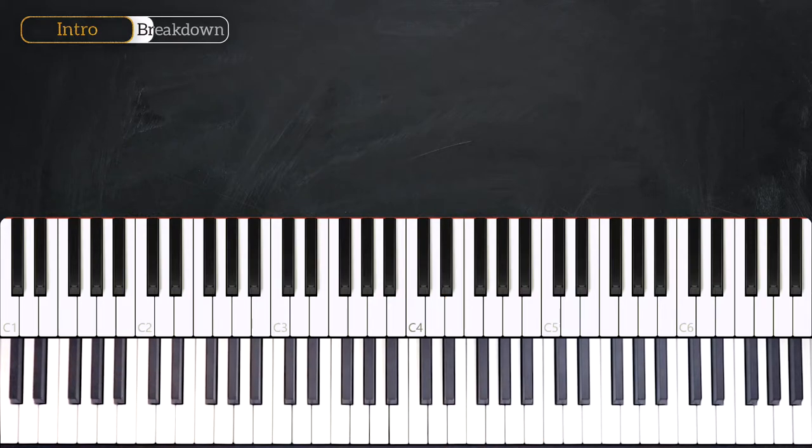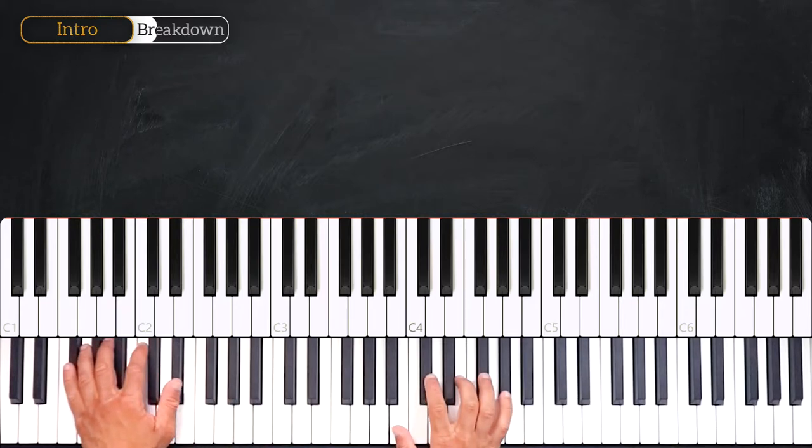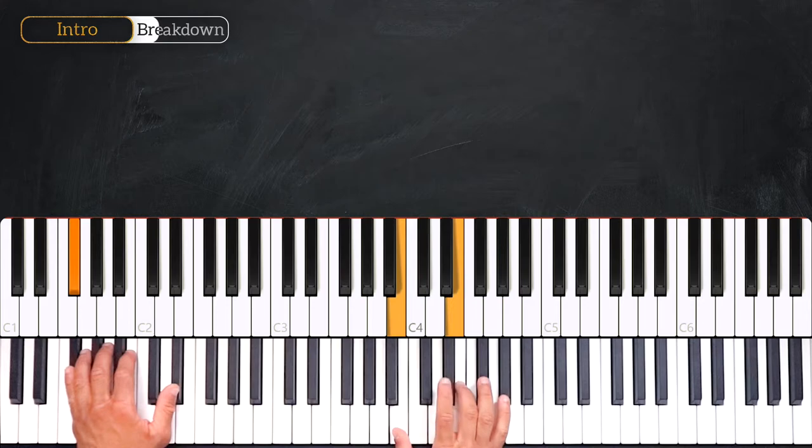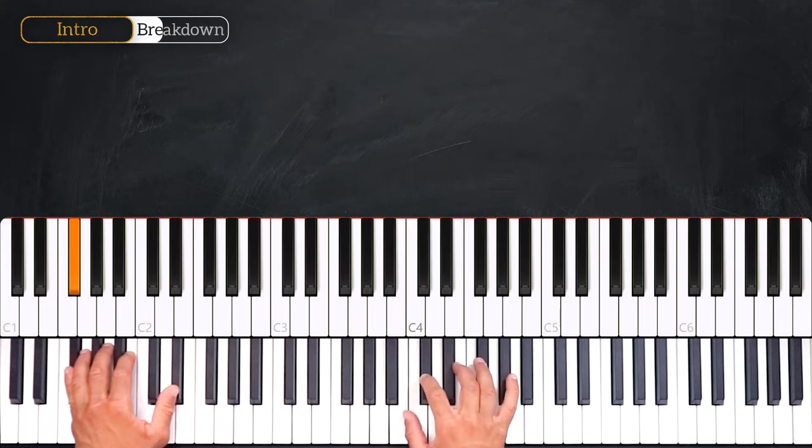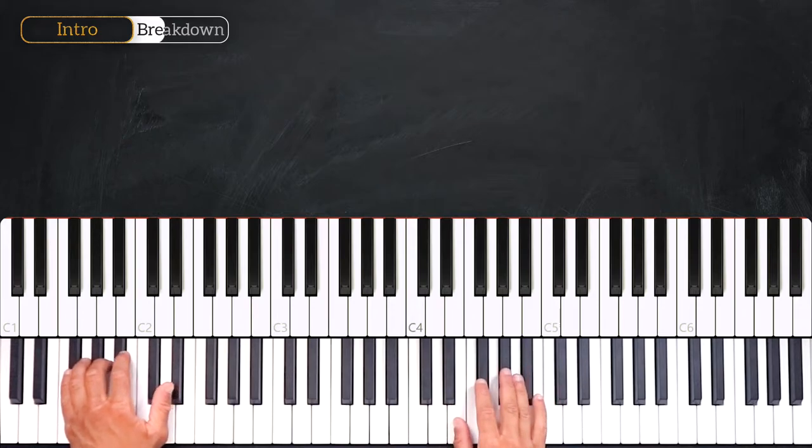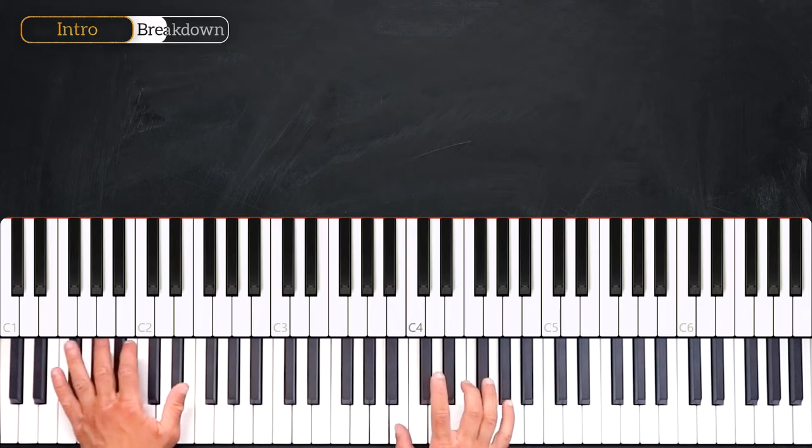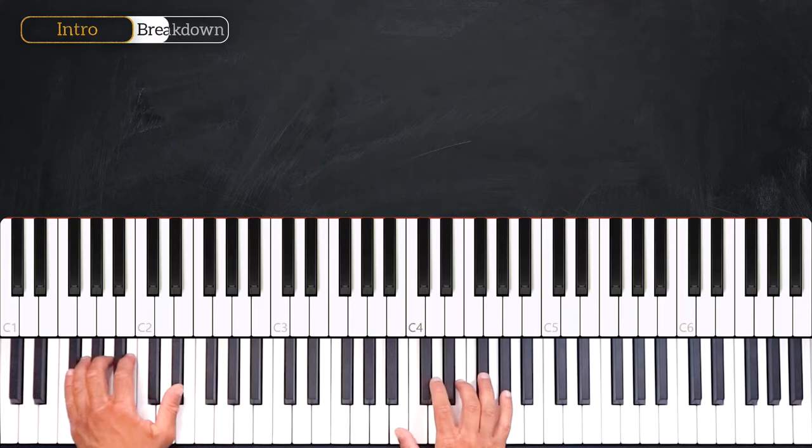Alright, so now let's break down the pattern. So we start by playing the F-sharp minor 11, then on the right hand we'll play C-sharp into the A major 7. So it sounds just like this.